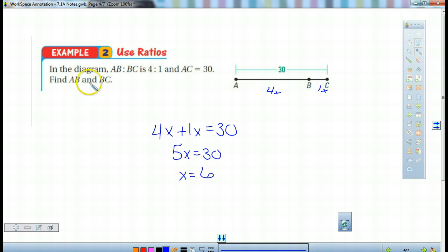It's all fine and dandy that we have x but we also need to figure out what these lengths are. So let's plug in our x to figure out what they are. This one we're going to take 4 times 6 and we get 24. So AB is 24. BC is going to be 1x, 1 times 6 gives us 6. And we can check it by saying 24 plus 6 gives us 30.